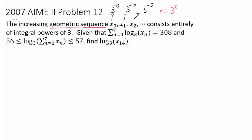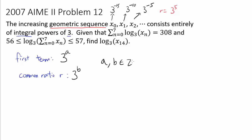Whenever we have a geometric sequence, the two things we want to pay attention to are the first term and the common ratio R. In this case, we know every single term is going to be an integer power of 3. So the first term can be written as 3 to some integer power, let's say A, and the common ratio can be written as 3 to some other integer power, let's say B. So A and B are integers. We have a geometric sequence where 3 to the A is x0, the first term.